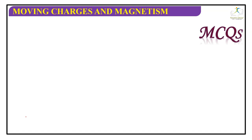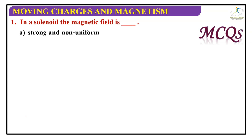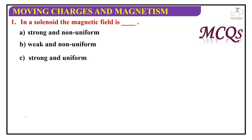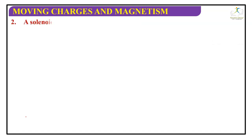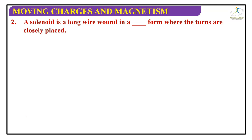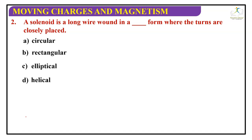Now moving to the questionnaire. Question 1: In a solenoid, the magnetic field is — strong and non-uniform, weak and non-uniform, strong and uniform, or weak and uniform? The correct answer is strong and uniform. Question 2: A solenoid is a long wire wound in a dash form where the turns are closely packed — circular, rectangular, electrical, or helical? The correct answer is helical.